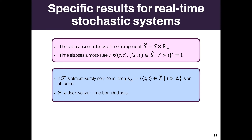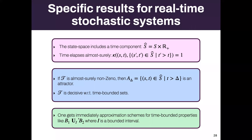This is interesting because we can then prove that T is decisive with respect to everything that is time-bounded. In particular, one gets immediately approximation schemes to compute probabilities of all time-bounded properties. For example, if you want to know whether you can reach some goal in no more than five time units, you can approximate it using our scheme.